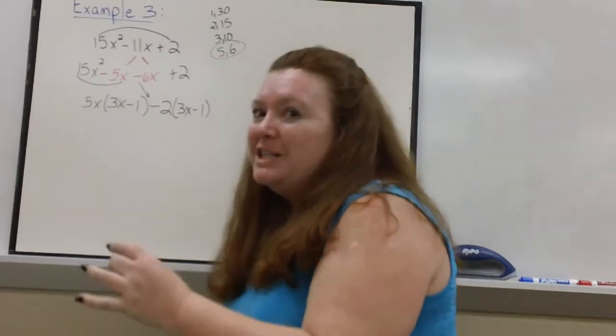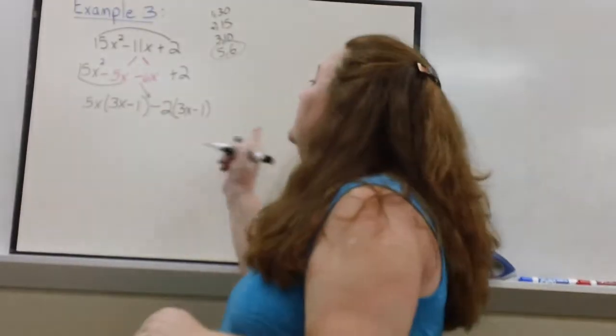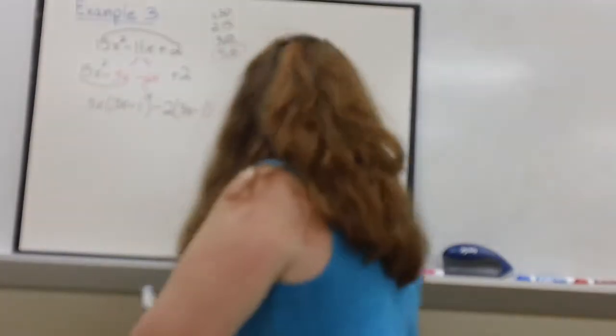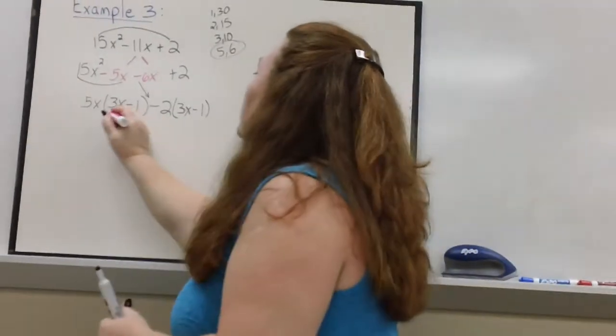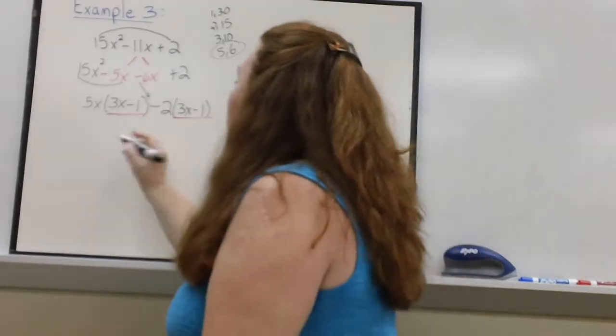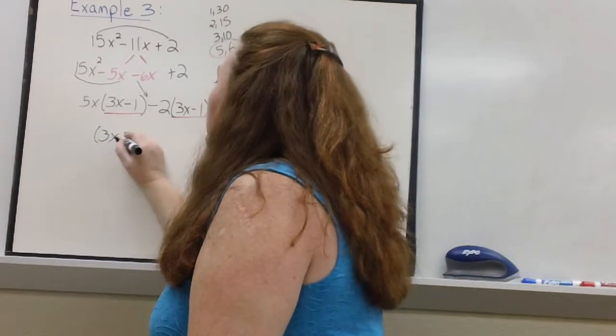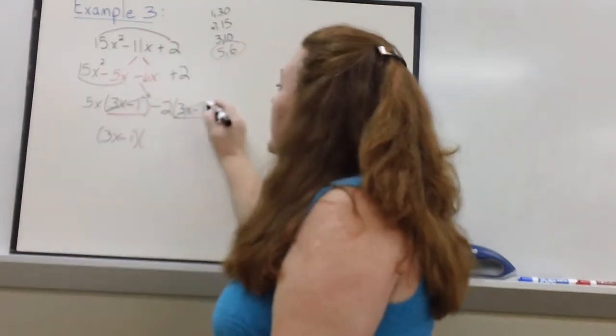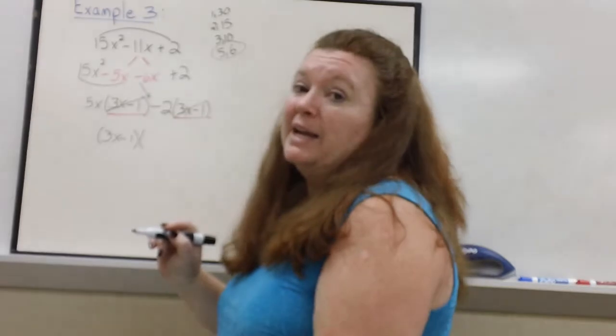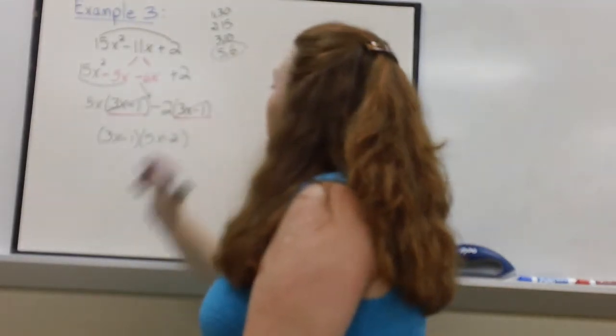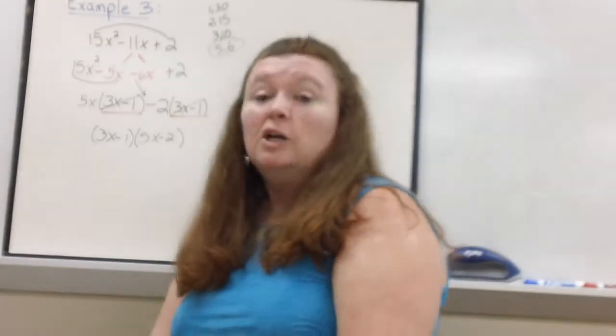I have matching parentheses. Yay. Two terms. I'm going to take out the common factor, which is right there. They both have a 3x minus 1. So, I have common factor of 3x minus 1. What's left when I divide them both by 3x minus 1? 5x minus 2. And I have factored it. Good luck to you.